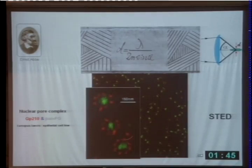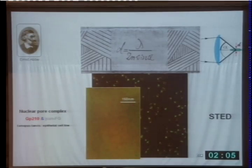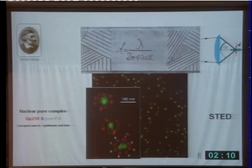These nuclear pore complexes consist of eight subunits — and why can you see them? Because the spatial resolution has been improved in this case over confocal by an order of magnitude. An order of magnitude of resolution improvement really tells you a different story. Comparing it with the confocal image, you can see that this opens many, many possibilities.